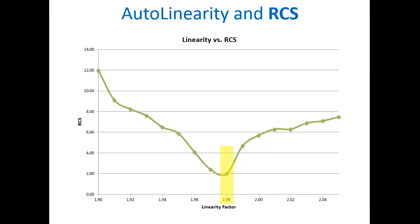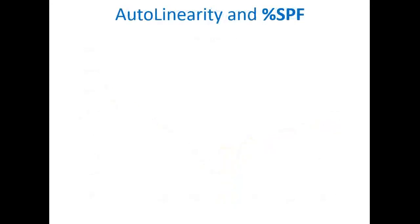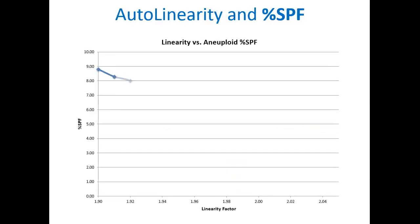How important is the linearity setting in estimating S-phase fraction? It can change the S-phase estimate significantly, as shown in this example graphic. A non-optimal linearity setting results in inaccurate aneuploid S-phase estimates, the appropriate value having been determined to be 1.98.